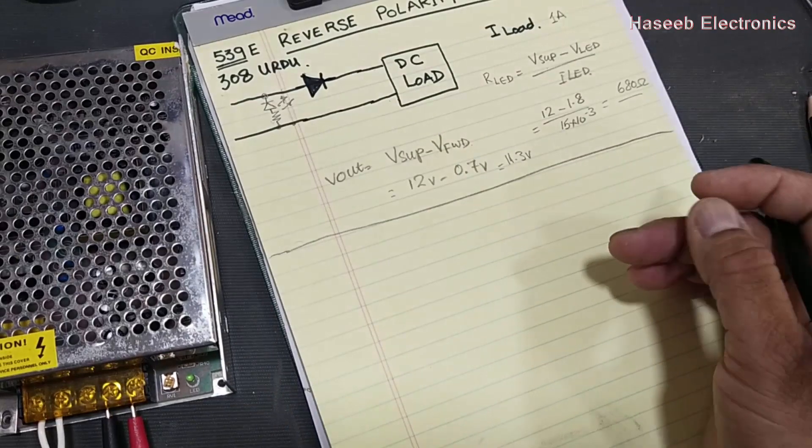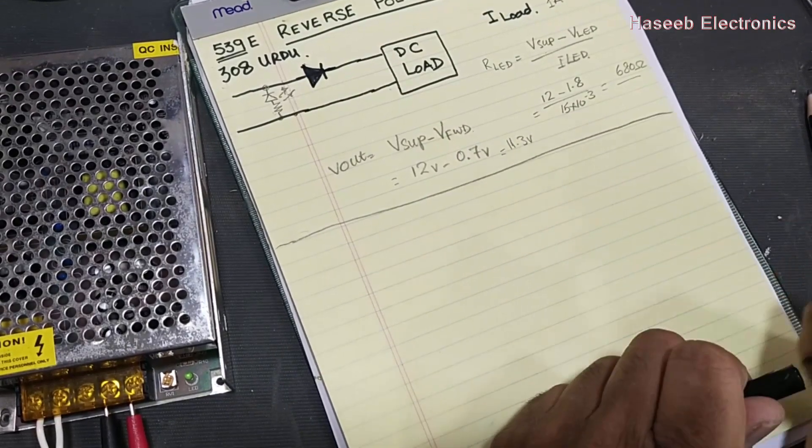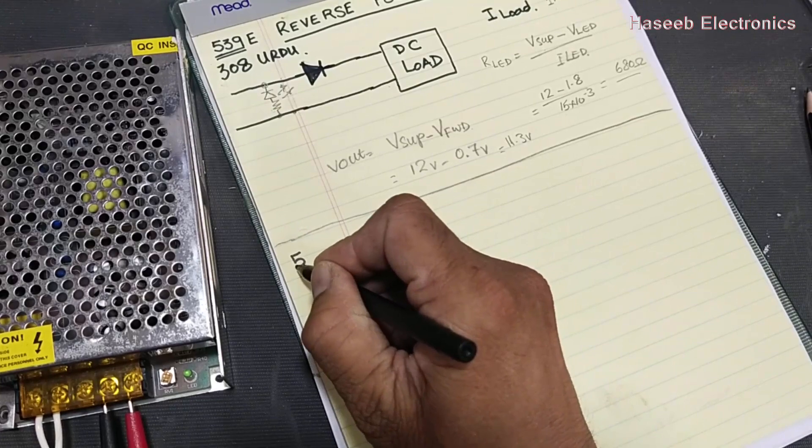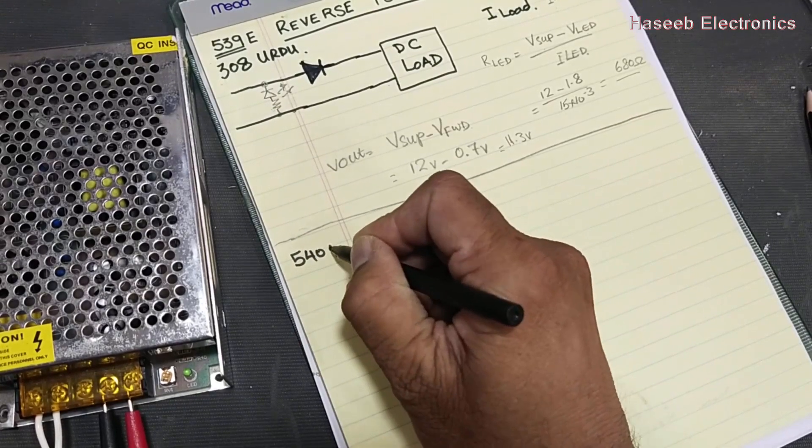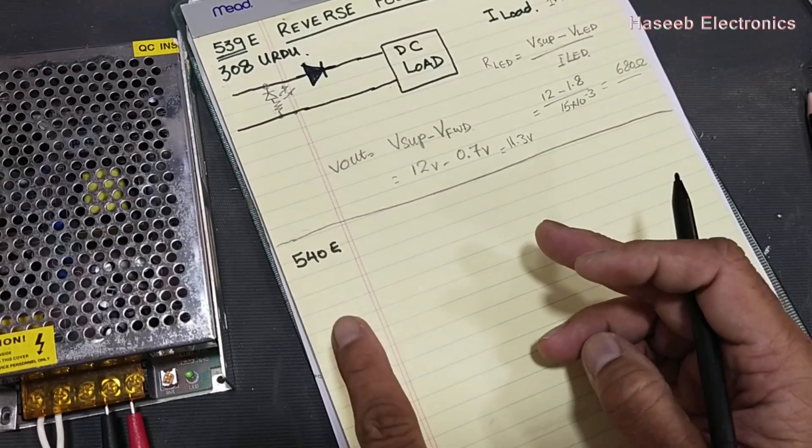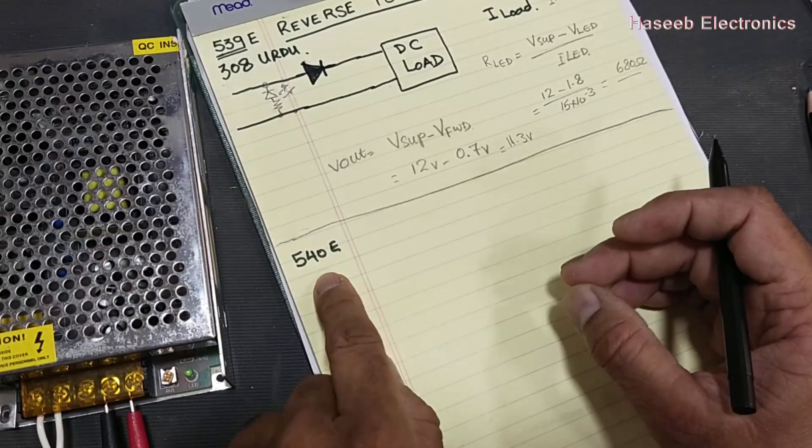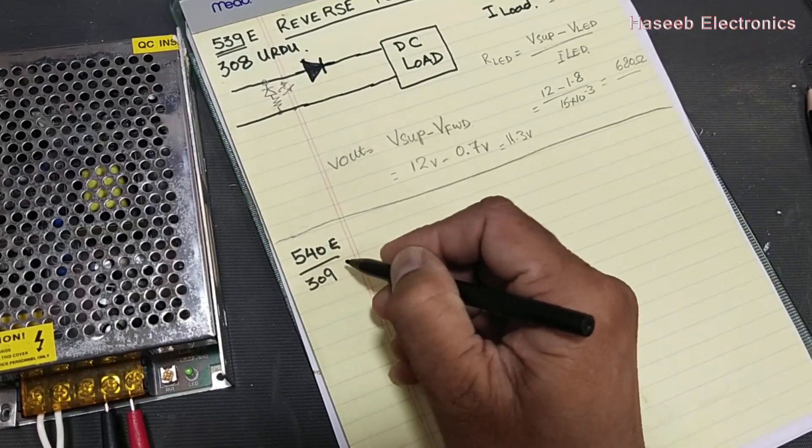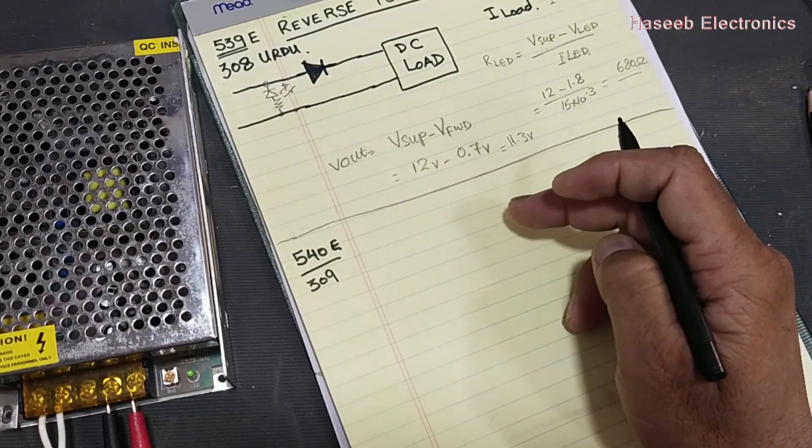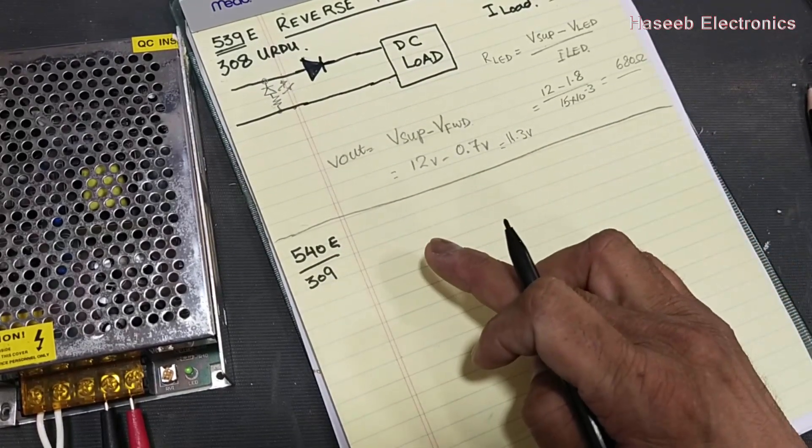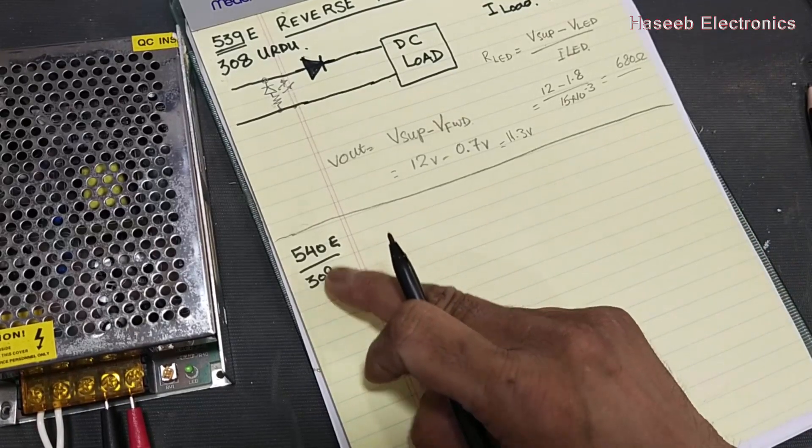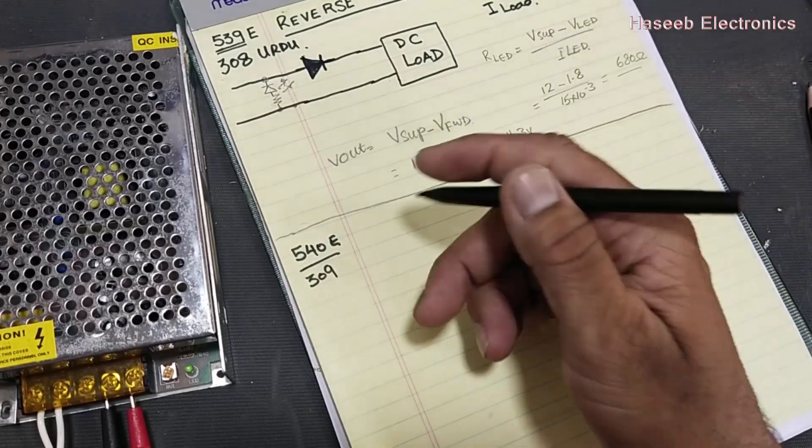So the load will be protected. In today's discussion, it is video number 540 for English viewers, and my Urdu viewers or Hindi viewers can watch 309 number video on my second channel Haseeb Electronics Urdu.